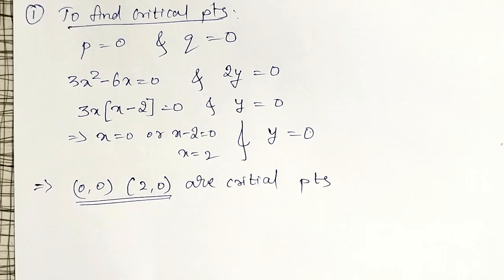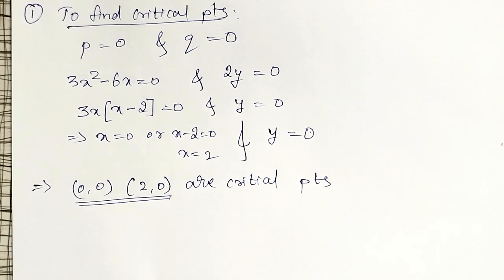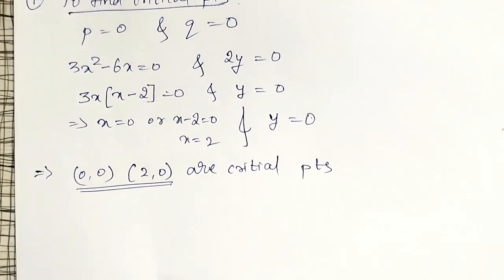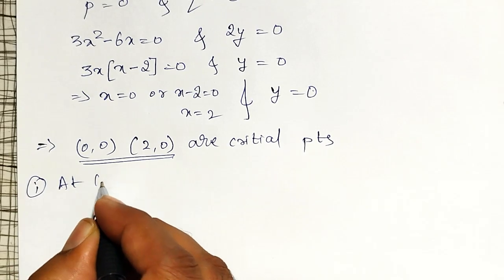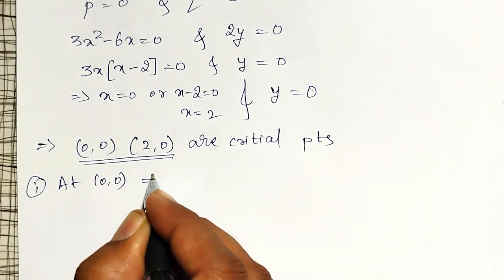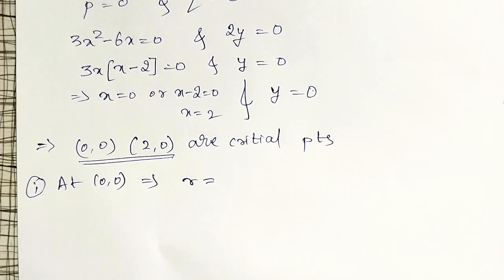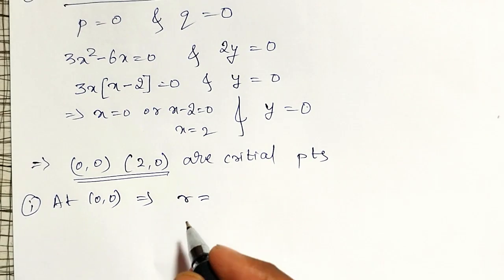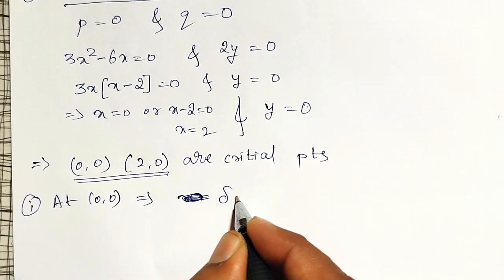At these critical points, I have to check the sufficient condition. Whether it is maximum point or minimum point. Let me consider first one by one. At 0, 0. What my r equal to? Or delta equal to. Let me find out. Then we will think on this one.